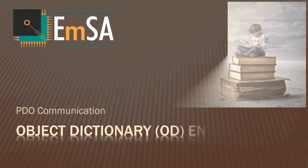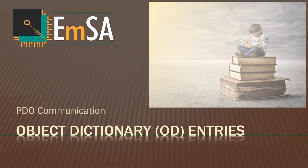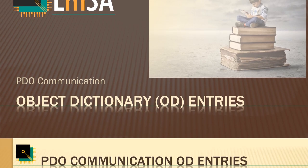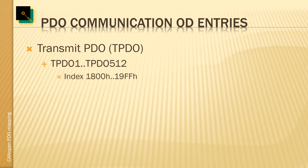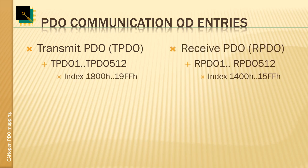In this following section, we'll now examine the object dictionary entries required to control this. The object dictionary entries controlling the trigger behavior are called the PDO communication parameters, and there are a set of transmit PDO parameters and a set of receive PDO parameters. Theoretically, every node could have up to 512 of these. Realistically, simple sensors and output devices just have one to four PDOs. Only the major control unit that needs to receive and transmit a lot of data will really have as many as up to 512 PDOs.